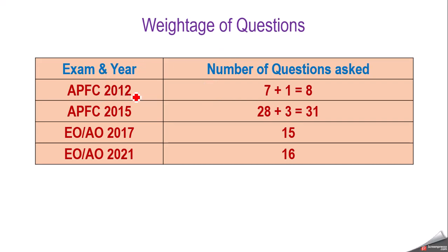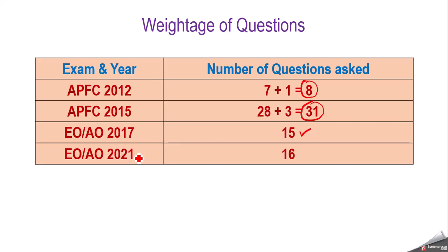In APFC 2012 there were total eight questions from this topic — seven from general mental ability and one from statistics. In APFC 2015 we had 28 questions from general mental ability and elementary mathematics, and three questions from statistics, so total 31 questions came from this topic out of 120. In Enforcement Officer 2017 we had 15 questions and in 2021 we had 16 questions.